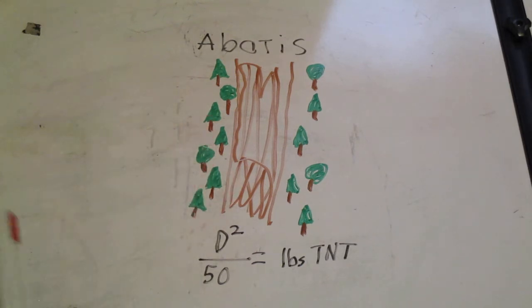For the 24 inch ones we would take 24 squared divided by 50 and that'll give us our pounds of TNT. This comes out to roughly 11 and a half pounds of TNT per tree, and then you would round that up to 12 pounds. Then you would take your 12 pounds times it by 20 because you have 20 trees.